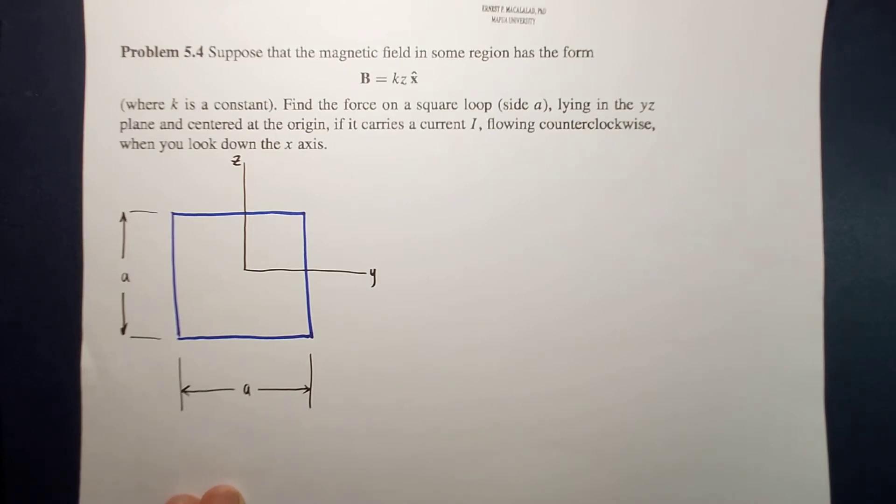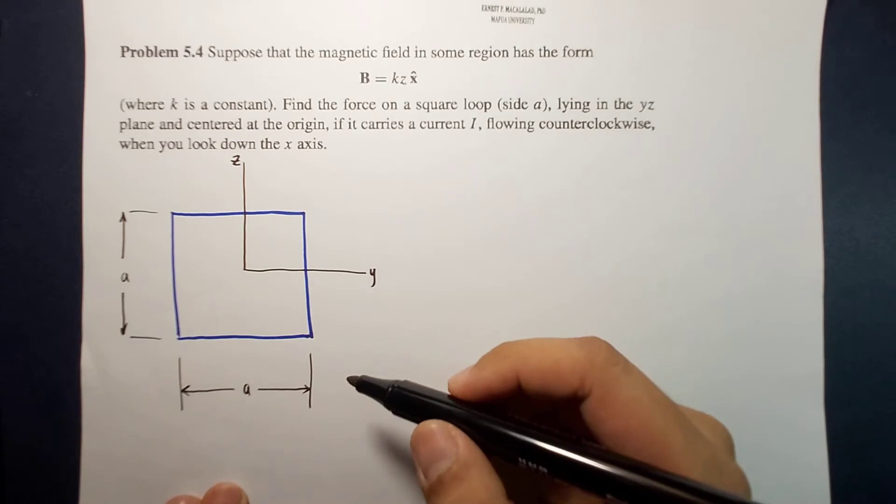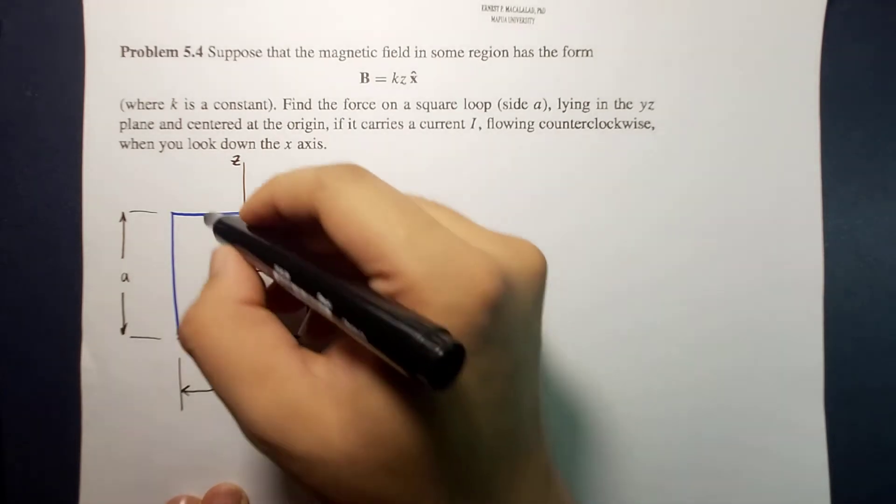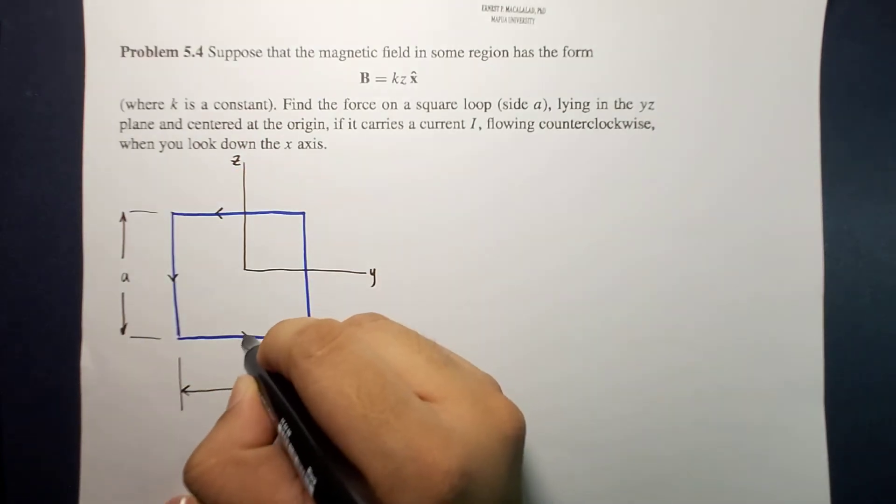Now it's also mentioned here that the current loop flows counterclockwise, so this is your direction of your current.